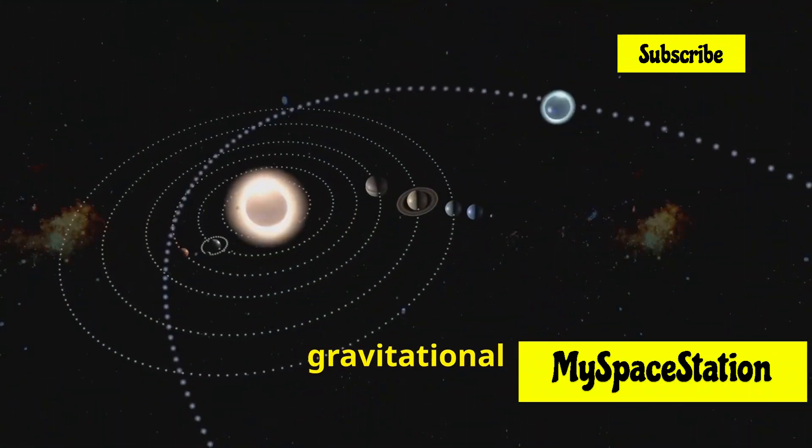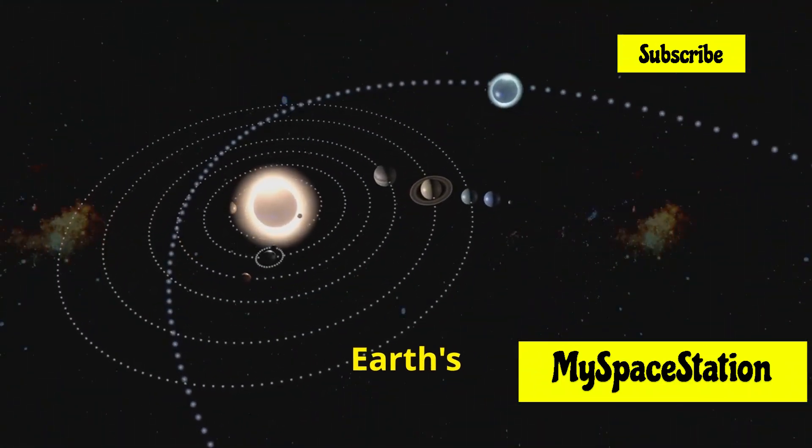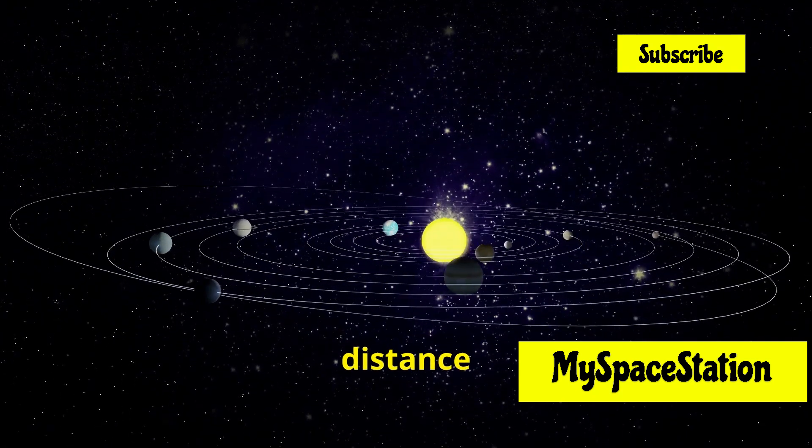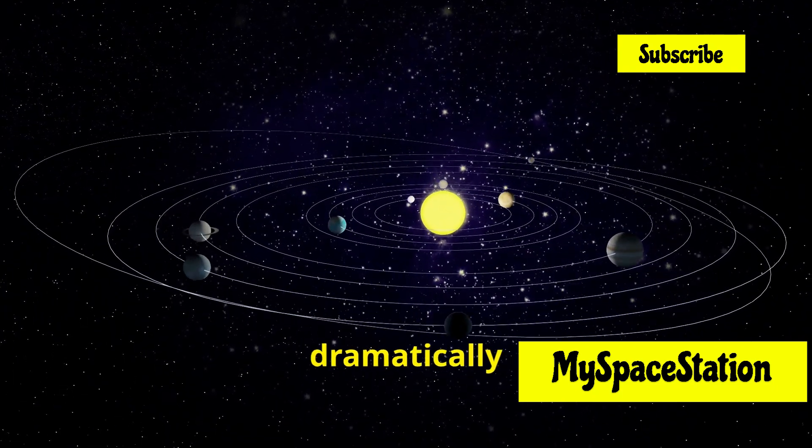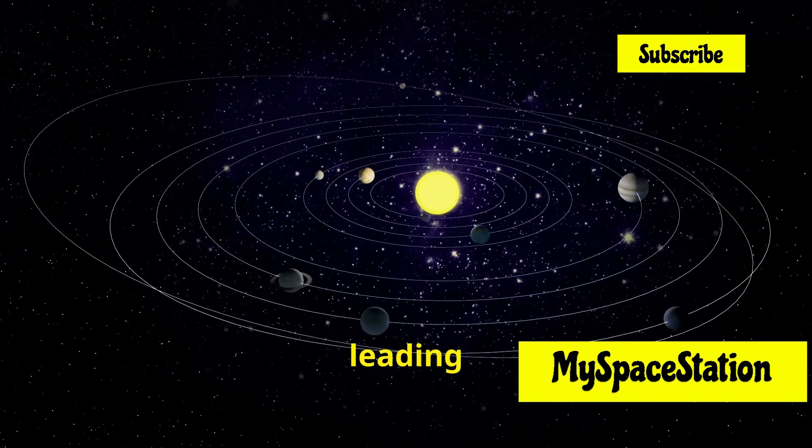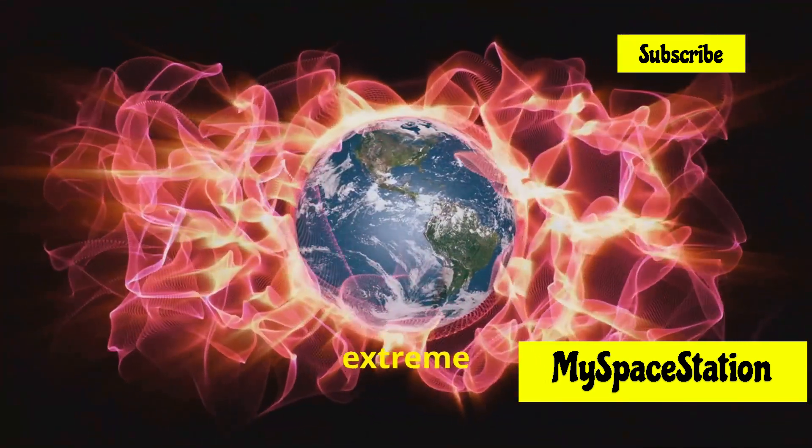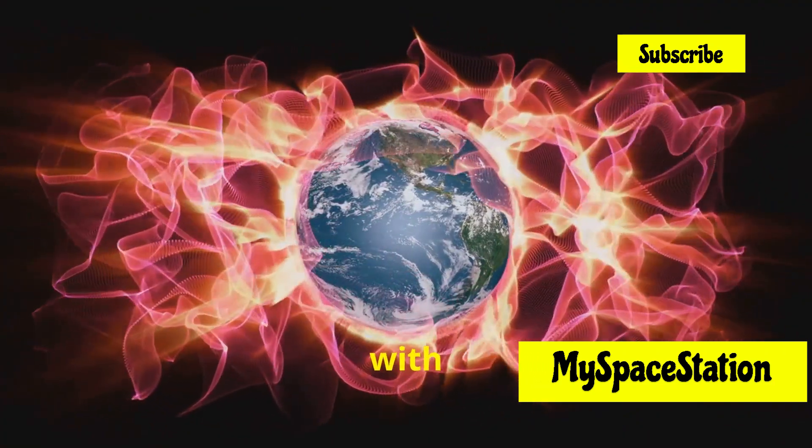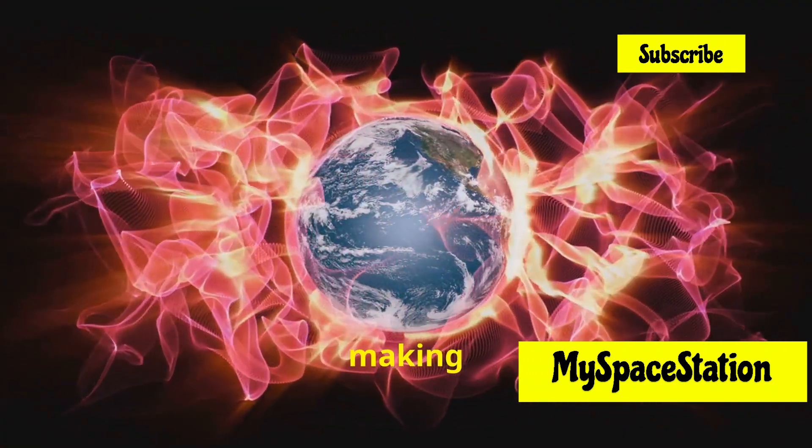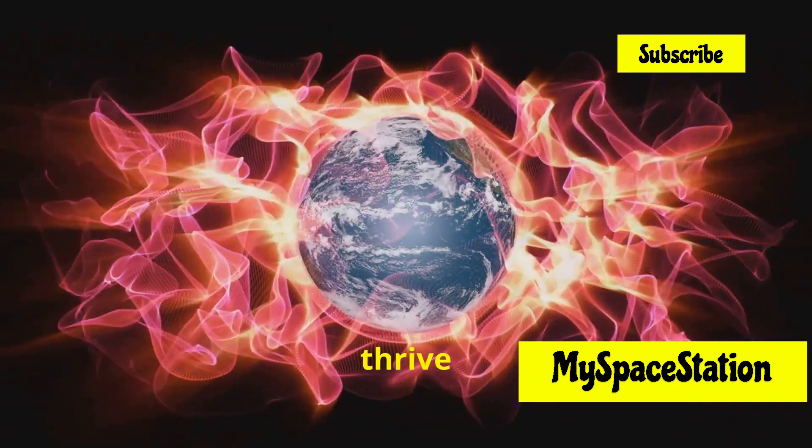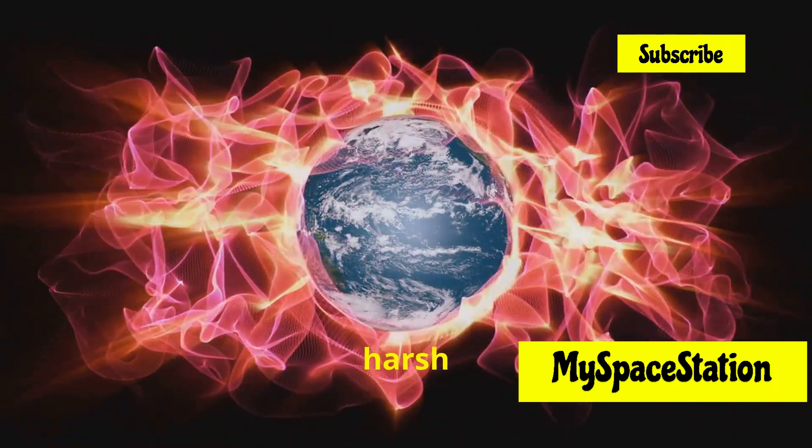Without the gravitational influence of other planets, Earth's orbit might be more elliptical, meaning its distance from the Sun would vary more dramatically throughout the year, leading to significant changes in climate. This could lead to more extreme temperature swings, with scorching summers and frigid winters, making it more challenging for life to thrive and adapt to such harsh conditions.